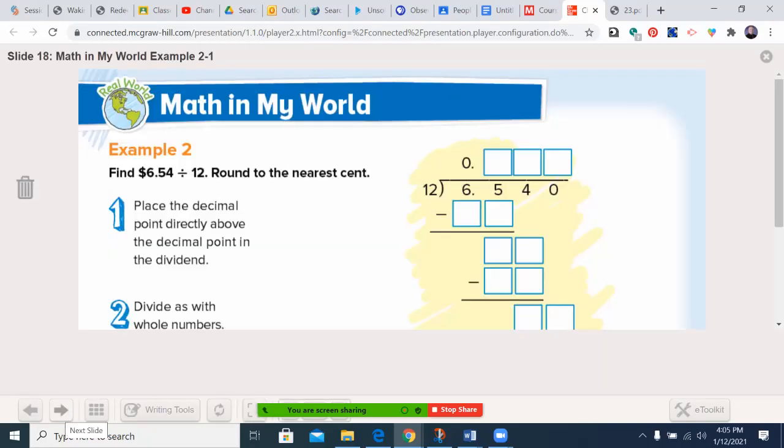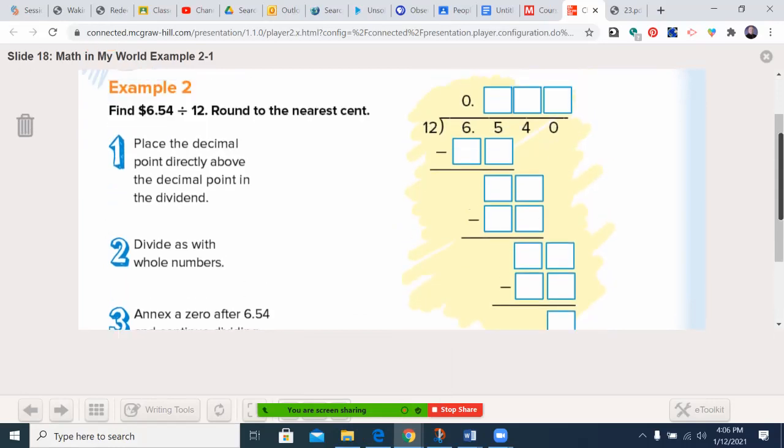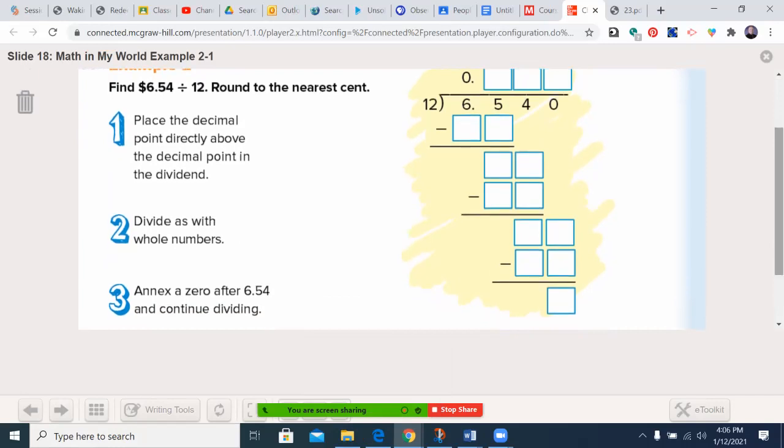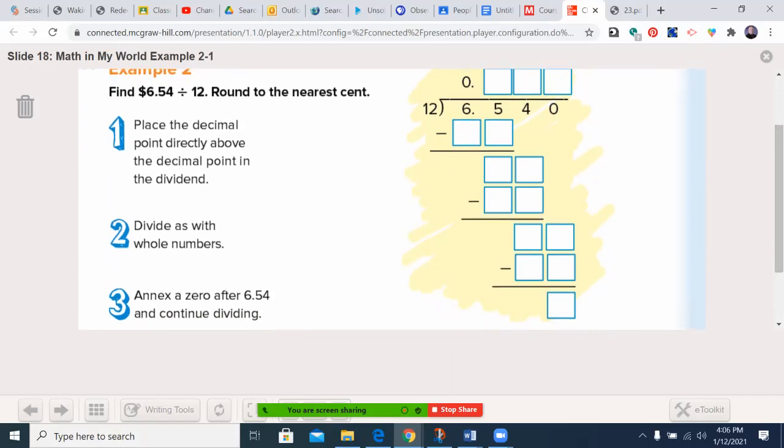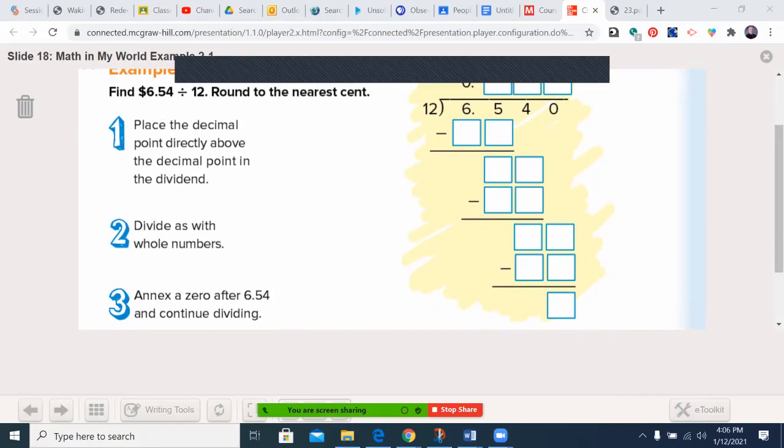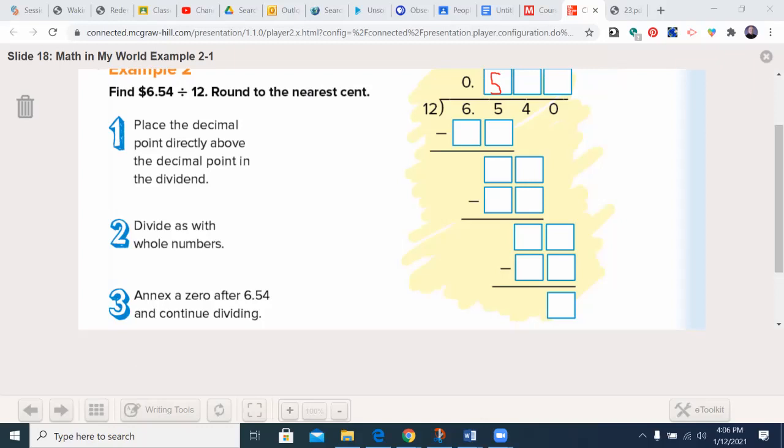All right, I'm going to go ahead and move on to the next slide. We'll go to the top of page 444, and this is the example. We're going to find $6.54 divided by 12 and round to the nearest cent. So you see our steps here and the checks. We begin with moving that up here. We know it's a zero point because 12 does not go into six. And we know if we have a two-digit divisor, it's never going to go into the first number, because you can't put two into one.